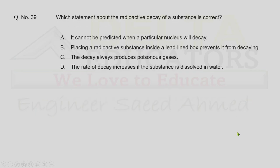Question 39. Which statement about radioactive decay is correct? Option A states it cannot be predicted when a particular nucleus will decay — correct, because radioactivity is a spontaneous process. Correct option is A.